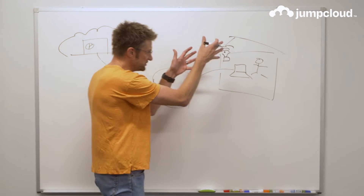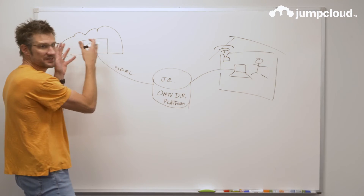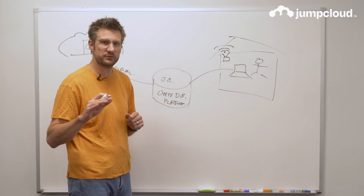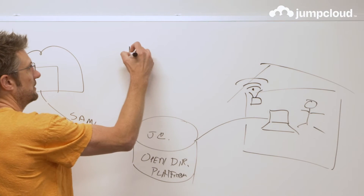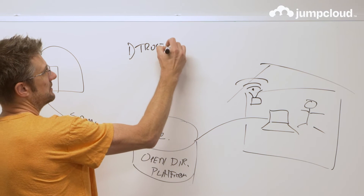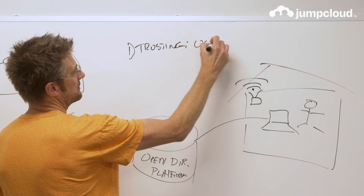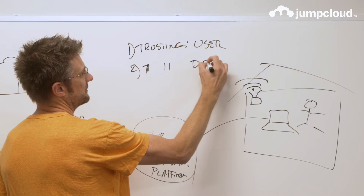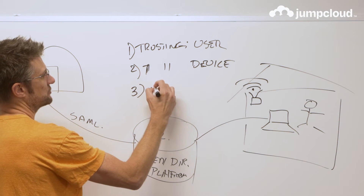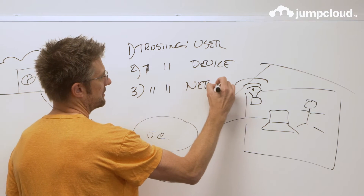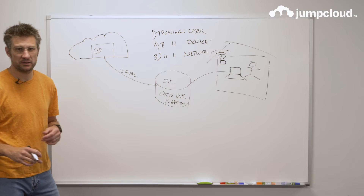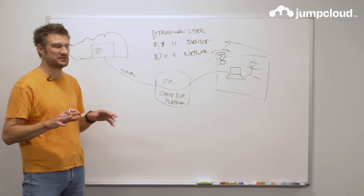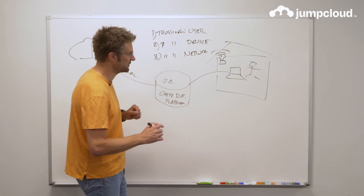So this is an untrusted environment, but what are we trying to do? We just need to get this person safe and secure access to the application. Where does JumpCloud come in? We're going to go through three basic principles of this transaction: trusting the user, trusting the device, and trusting the network. JumpCloud will take control of that scenario and lay the foundation for basic zero trust principles.